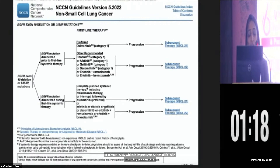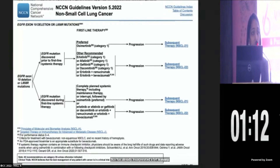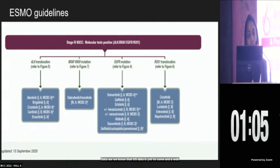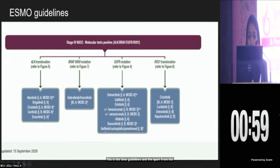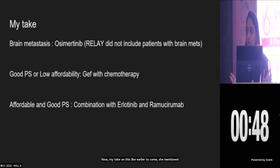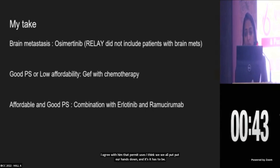What do the guidelines say? NCCN has already incorporated erlotinib with ramucirumab and erlotinib with bevacizumab combinations based on PFS data alone — even though OS data is yet to come and the bevacizumab combination didn't show OS benefit. The ESMO guidelines have also incorporated the chemotherapy and gefitinib combination. For brain metastasis, I agree with the previous speaker that it has to be osimertinib only, since the RELAY trial did not include patients with brain metastasis and the TATA trial had small representation with most patients having received whole brain radiotherapy.